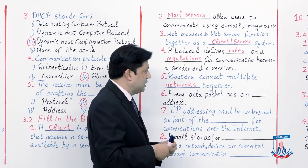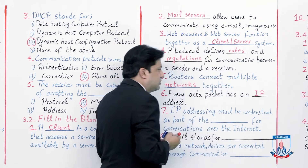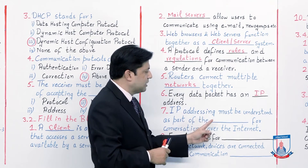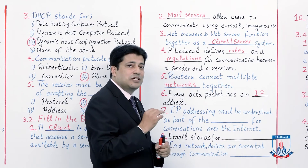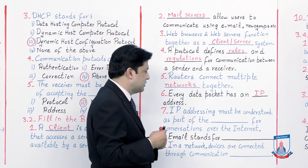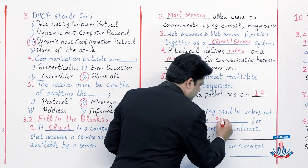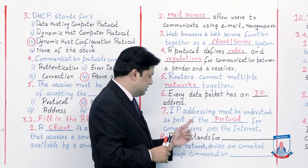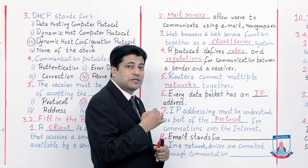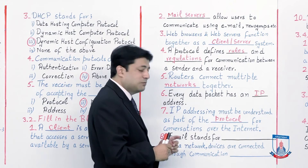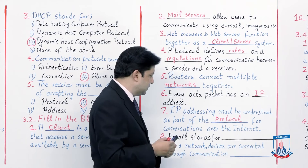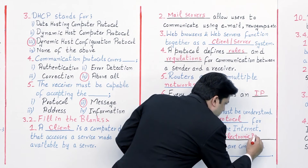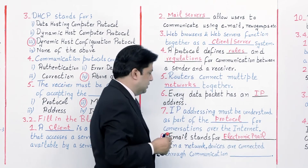Every data packet has an IP address. Number 7: IP addressing must be understood as part of the dash for conversations over the internet. IP addressing is part of the protocols used for conversation, so the straight forward answer is 'protocol.' Number 8: Email stands for dash. The word 'mail' stays as is — E stands for electronic. So email stands for 'electronic mail.'